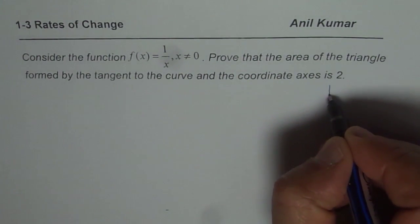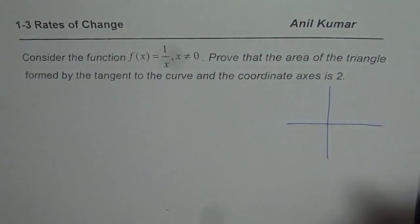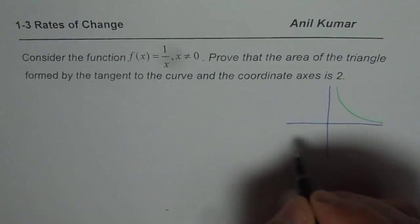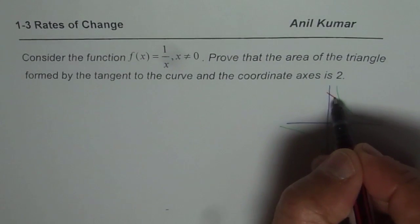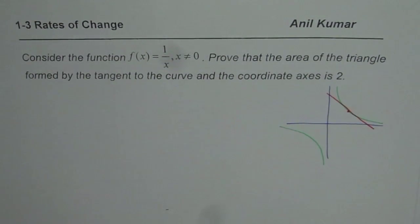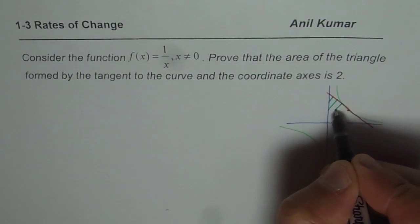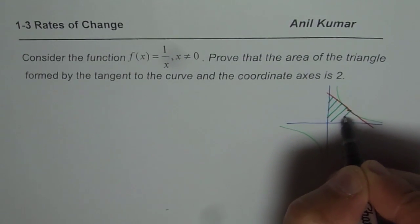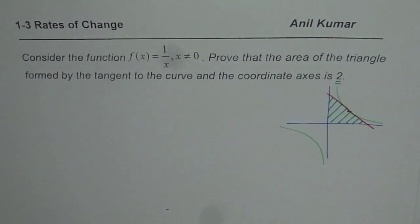Let us try to understand the question first. The curve 1/x could be something like this. Now if I draw a tangent at any point on this curve, what we need to prove is that the area of the triangle formed by the tangent line and the coordinate axes is 2. So that area equals 2 — this is what we have to prove.